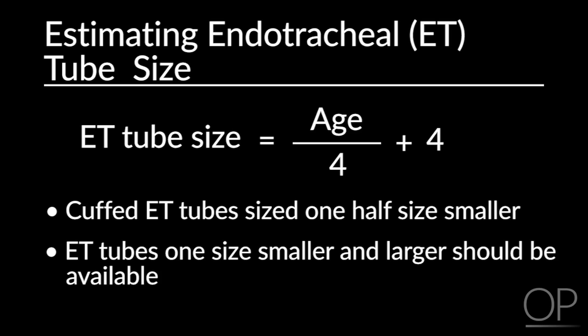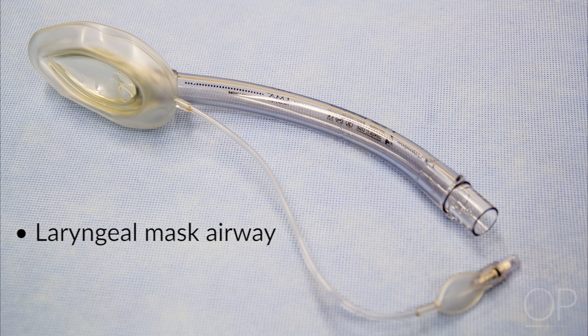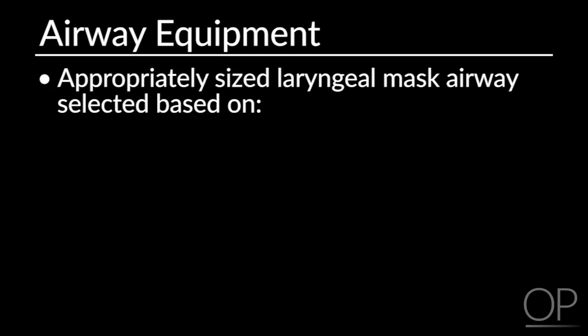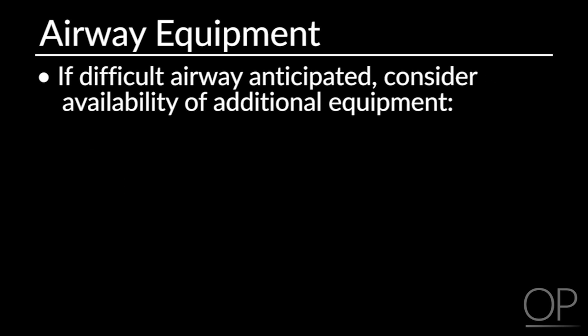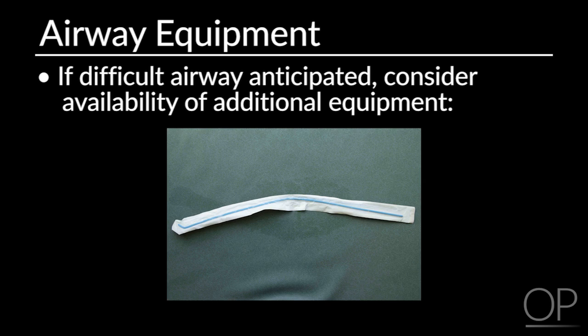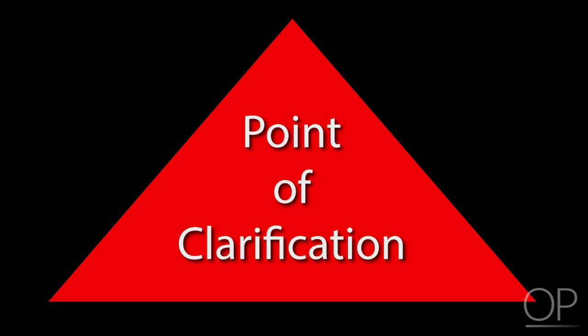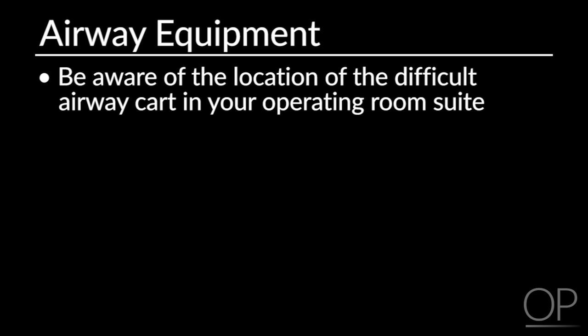Cuffed endotracheal tubes should be sized one half size smaller. Endotracheal tubes one size smaller and one size larger should also be available at the time of induction and intubation. Laryngeal mask airways or other supraglottic airway devices should be available for emergency airway management, selected based on age, weight, and clinical judgment. If a difficult airway is anticipated, consider availability of additional equipment including an endotracheal tube introducer, fiber optic scope, or other equipment available at your institution. It is important to be aware of the location of the difficult airway cart in your operating room suite.